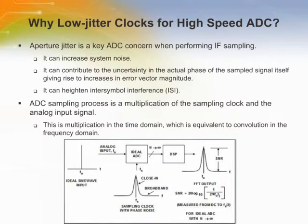A low aperture jitter specification of an ADC is critical to achieving high signal-to-noise ratios. Jitter generated by a clock source can cause the ADC's internal circuitry to falsely trigger the sampling time, resulting in false sampling of the analog input amplitude and thus degrading the signal-to-noise ratio. The total jitter is the root-mean-square of the internal converter aperture jitter and the external sampling clock jitter.